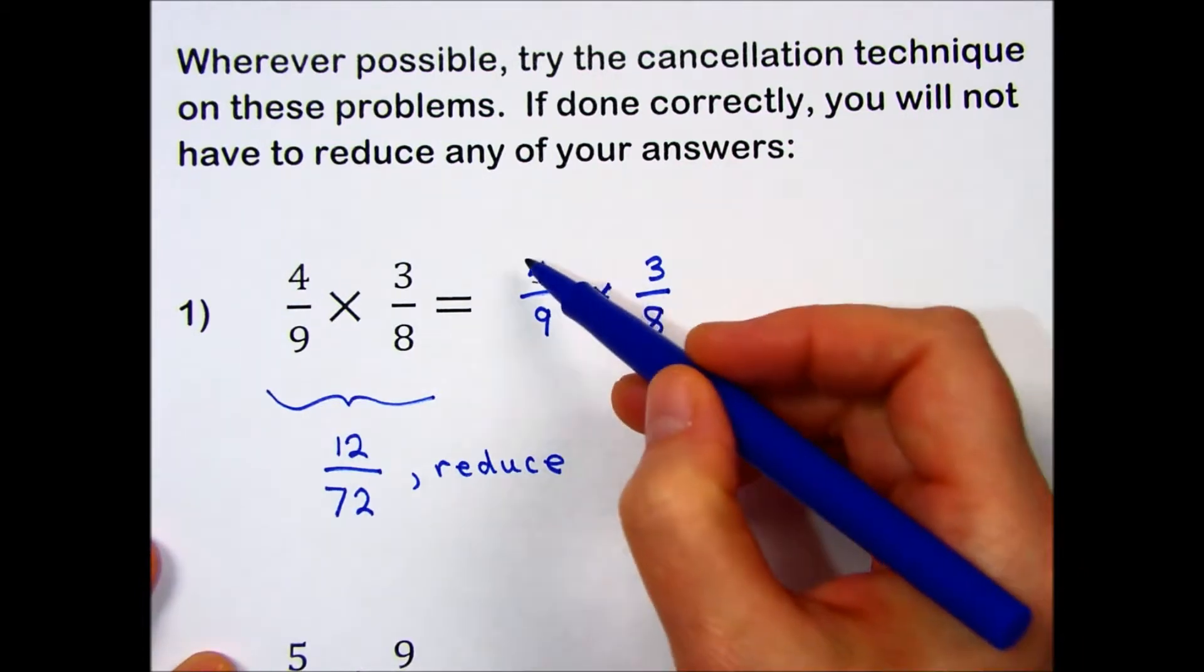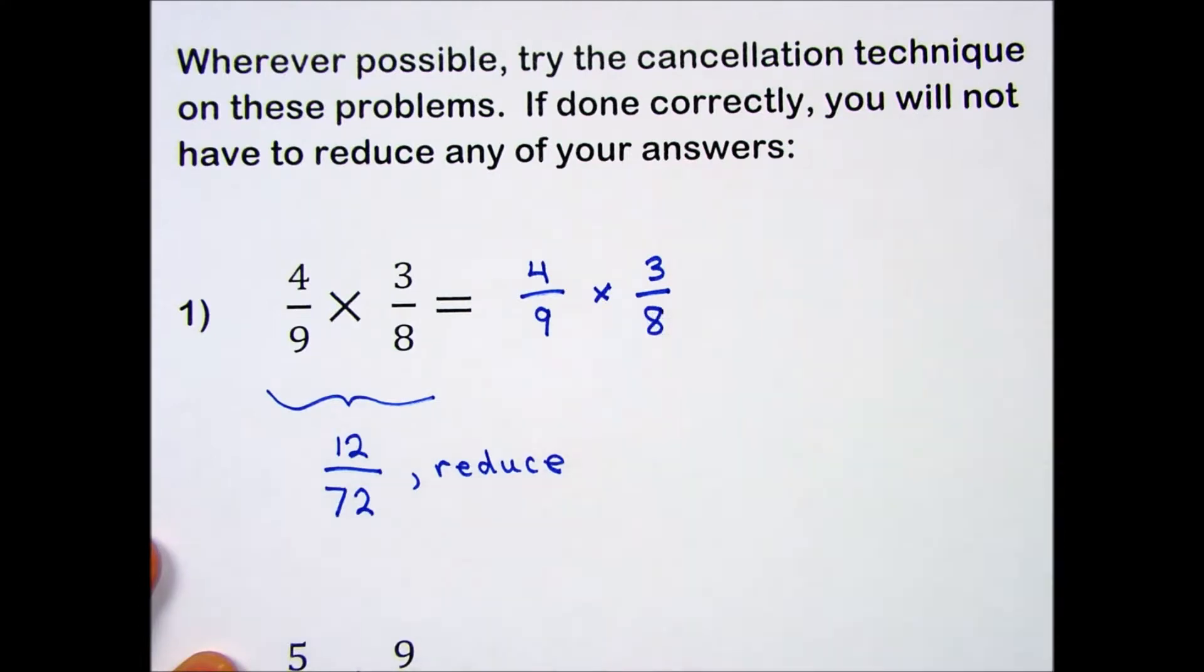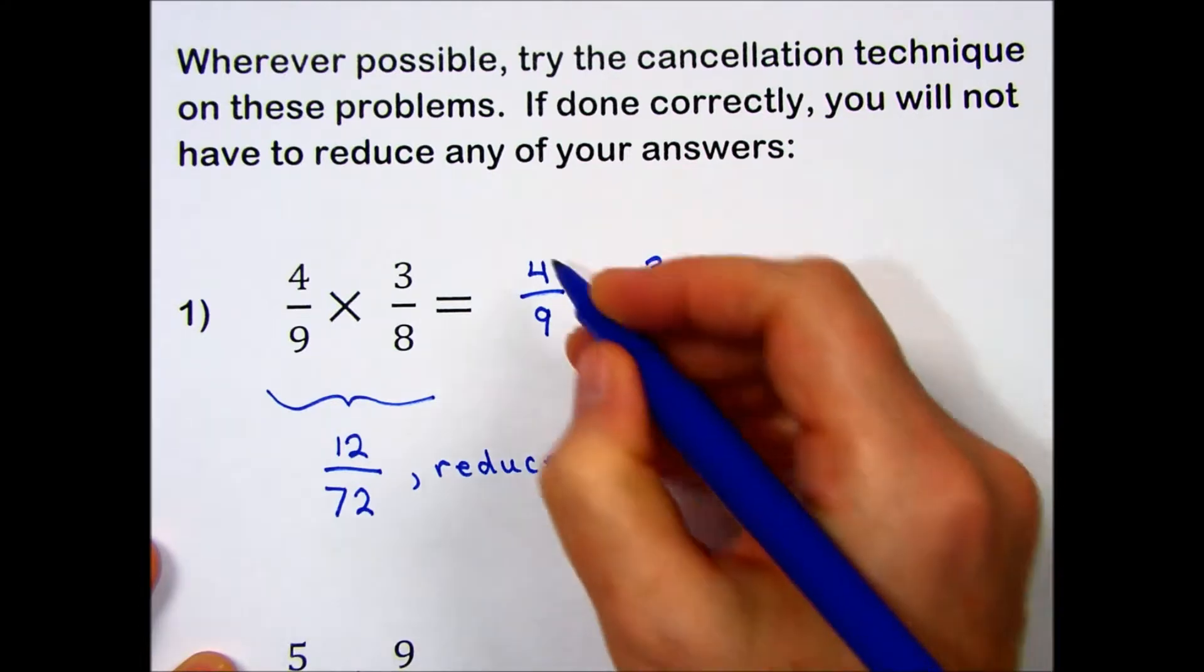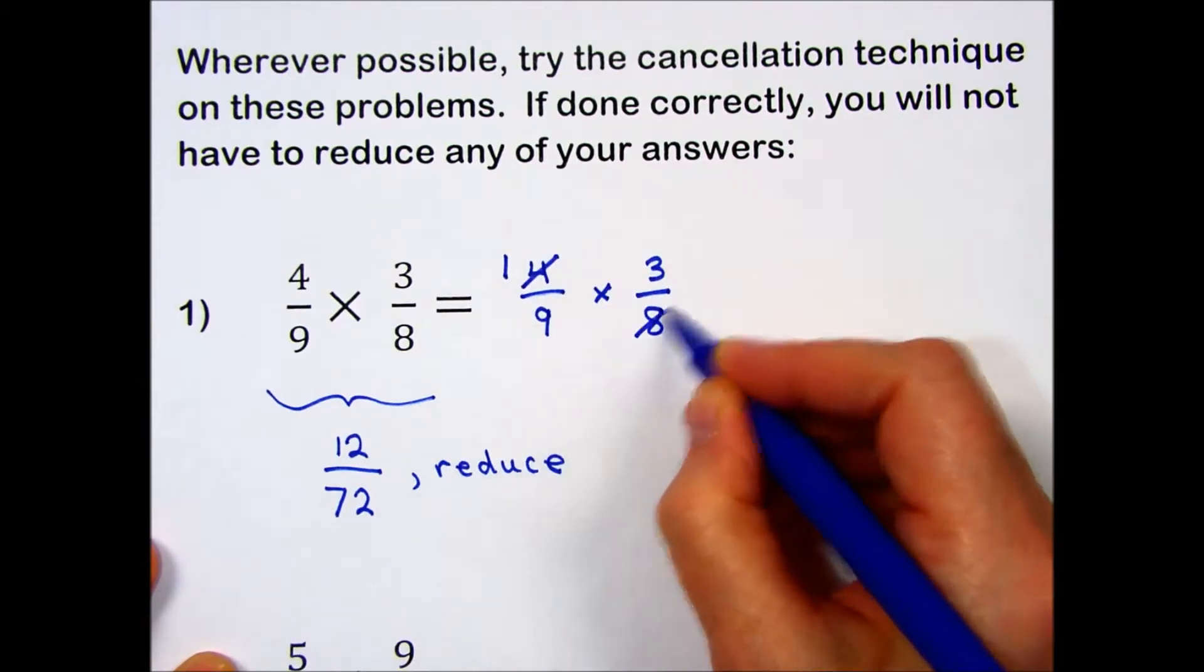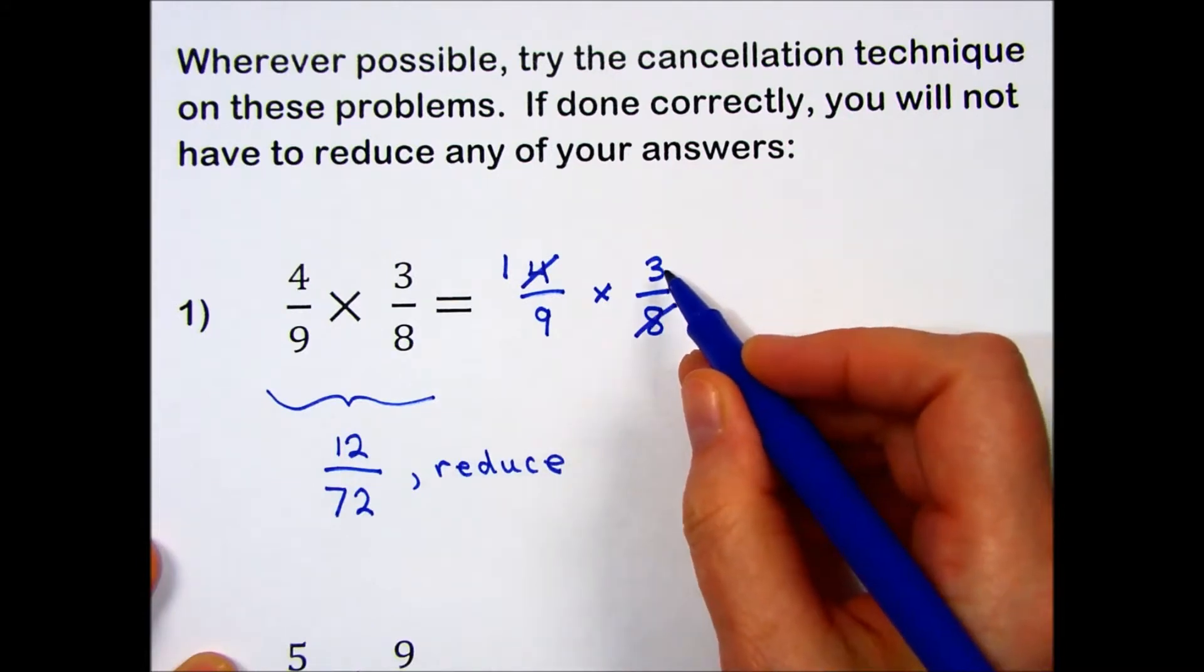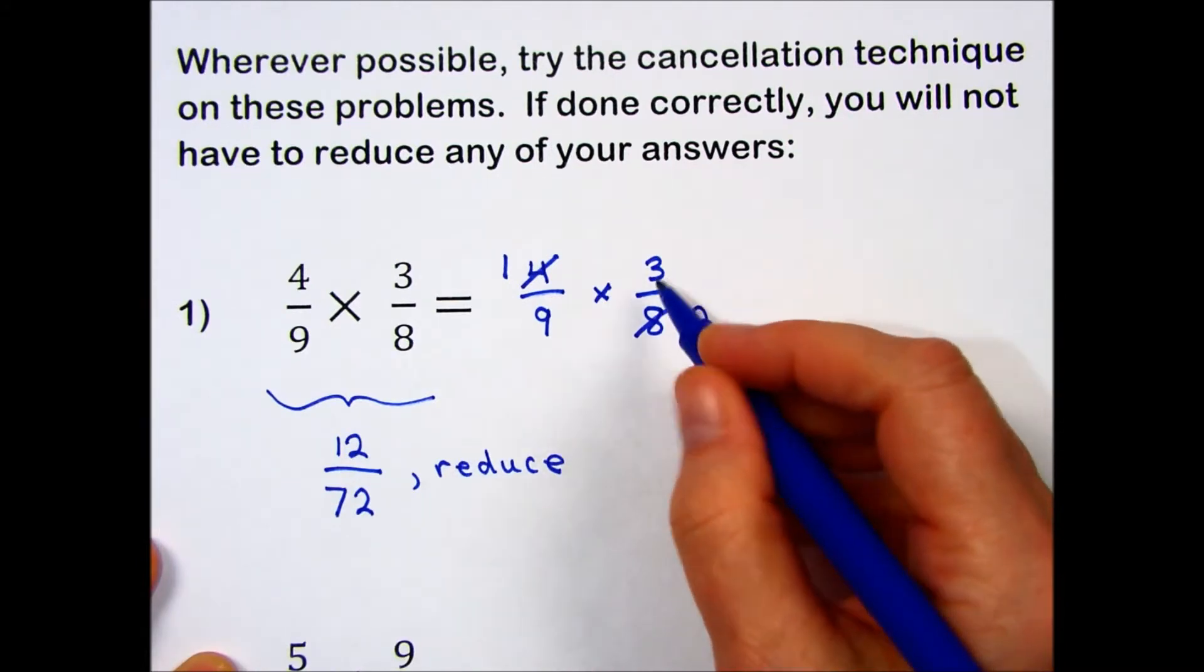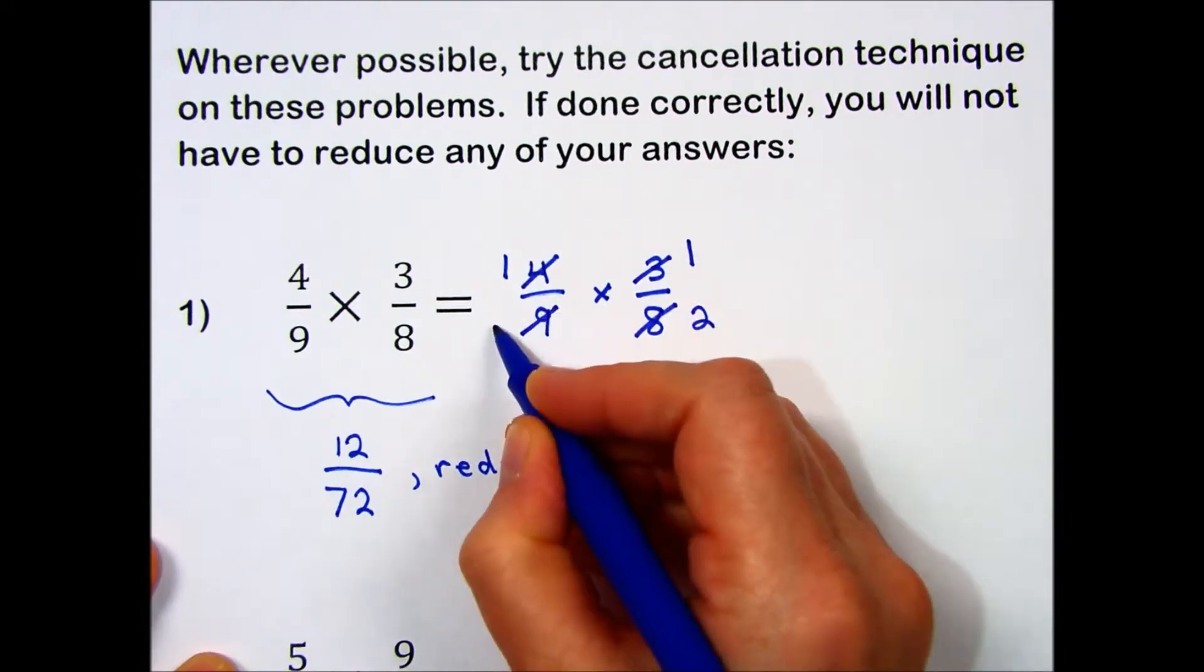For example, 4 and 8 are each divisible by 4. I do the division in my head and write the answer like this. 4 divided by 4 is 1. 8 divided by 4 is 2. On this diagonal, I notice they're both divisible by 3. 3 divided by 3 is 1. 9 divided by 3 is 3.